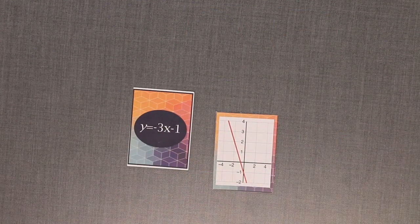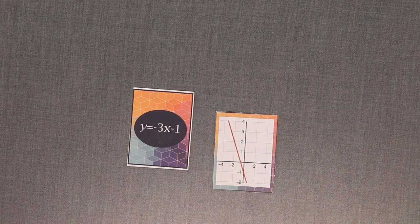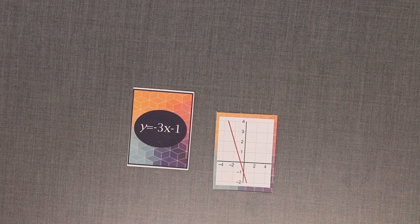If you recognize that two non-context cards represent the same function, you must call function war. After explaining why the functions are the same, you automatically win all the cards played that round. To win, a player must win all the cards in the deck through the rounds of function war.